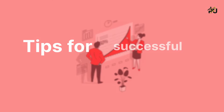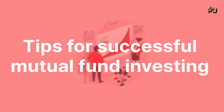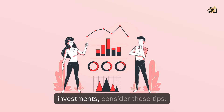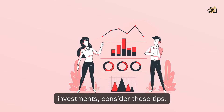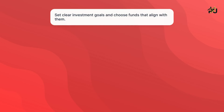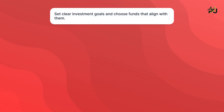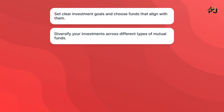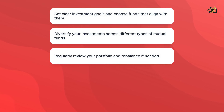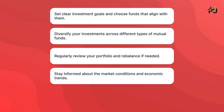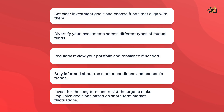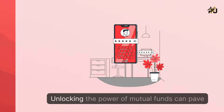Tips for successful mutual fund investing. To make the most of your mutual fund investments, consider these tips: set clear investment goals and choose funds that align with them; diversify your investments across different types of mutual funds; regularly review your portfolio and rebalance if needed; stay informed about market conditions and economic trends; and invest for the long term, resisting the urge to make impulsive decisions based on short-term market fluctuations.